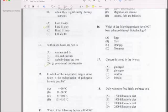Number 12: In which temperature range shown below is multiplication of pathogenic bacteria most possible? If your answer is B, then you're correct.